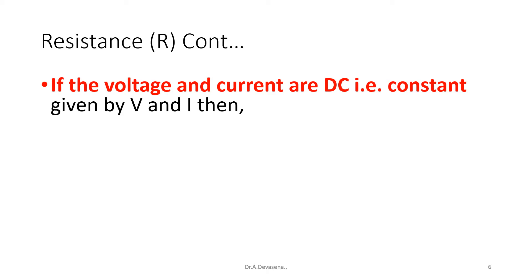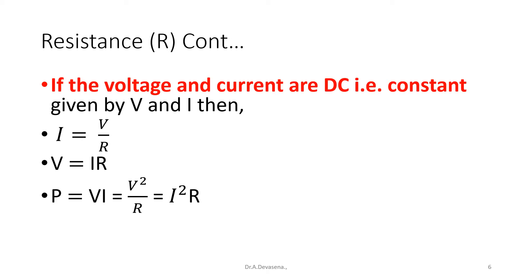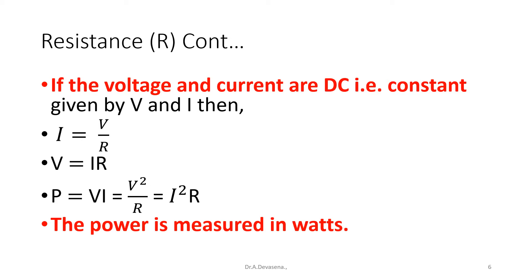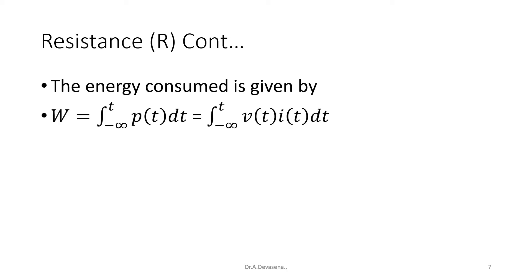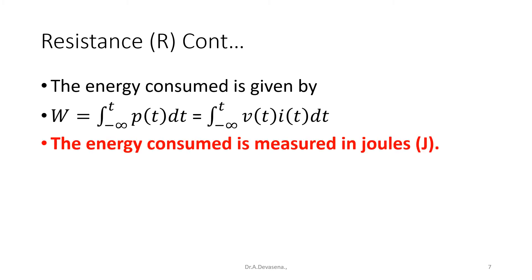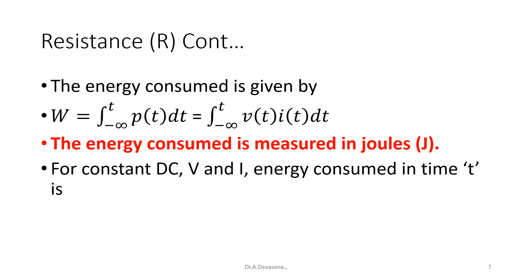If the voltage and current are DC, that is constant, given by capital V and capital I, then capital I is equal to V by R, or capital V is equal to I into R. The power is given by V into I, that is nothing but V square by R, that is equal to I square into R. The power is measured in watts. The energy consumed is given by W is equal to integral of minus infinity to t of P of t dt, that is nothing but integral of minus infinity to t of V of t into I of t dt. The energy consumed is measured in joules.